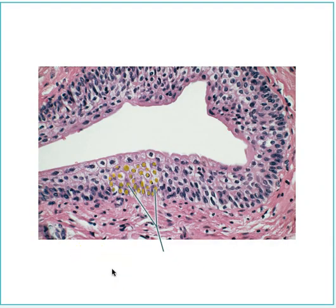Now you're identifying the highlighted structures and also the tissue type. The highlighted structures are definitely nuclei. And this tissue type is transitional epithelium. For bonus points, what is the name of this organ where you could find this? If you guessed urinary bladder, you are absolutely correct.